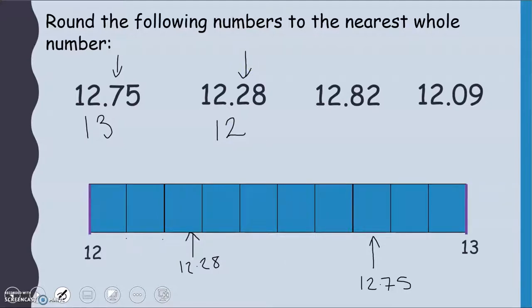12.82 is going to be somewhere about here. 8.2. So that is closer to 13. And again, 8 tells us to round up.